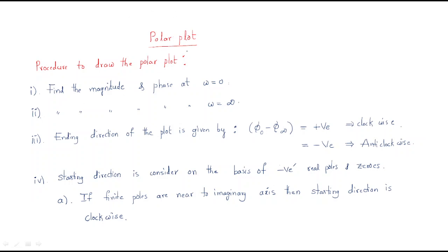We will enter into the next topic: the polar plot. Generally, polar coordinates are presented at an angle theta, where the magnitude is shown by r and theta shows the phase. Using this concept, we will discuss the polar plot, which is useful for analyzing the stability of a given system. The polar plot is the basic part of the Nyquist plot, so by using polar plots we will draw the Nyquist plot.